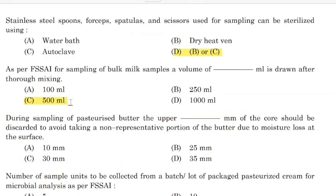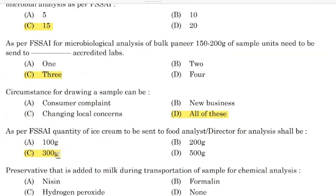During sampling of pasteurized butter, the upper 25 mm of the core should be discarded to avoid taking a non-representative portion of the butter due to moisture loss at the surface. Correct answer: Option B — 25 mm.